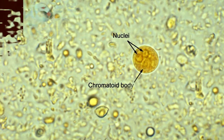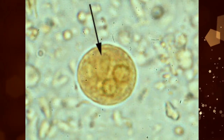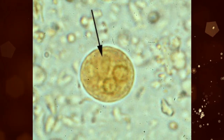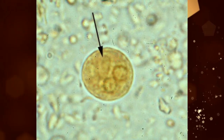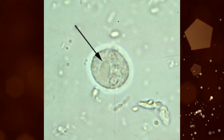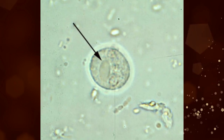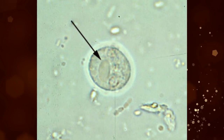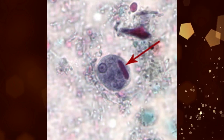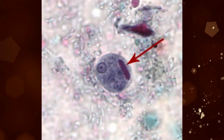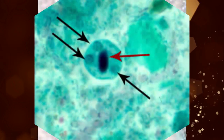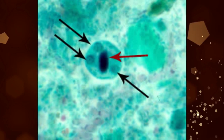The cytoplasm is yellowish gray in color after staining with iodine solution, giving a granular and dirty appearance. Cysts usually measure 12 to 15 micrometers. The membrane is thin, regular, and circular.